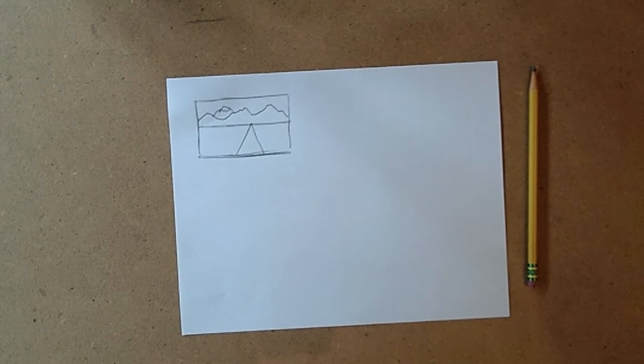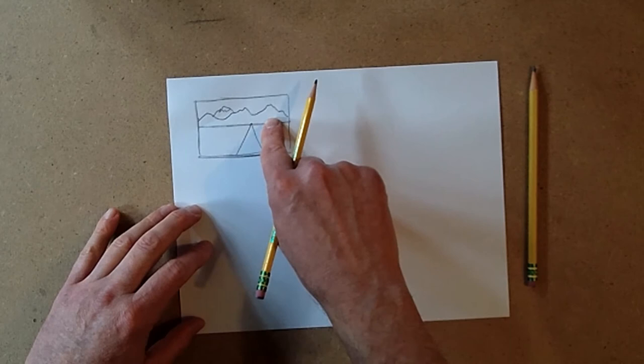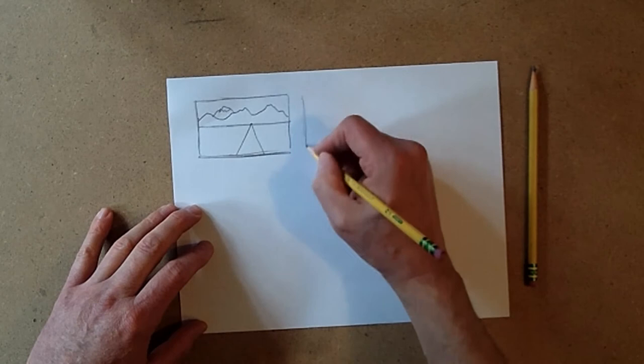Now what this project is about is what happens if we take the horizon line and put it at a different level on the paper. So this is what the little sketches are about.